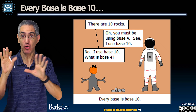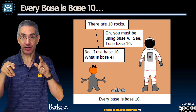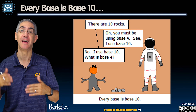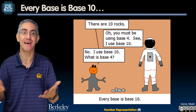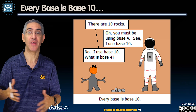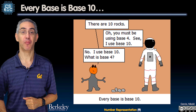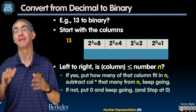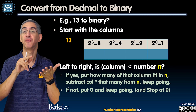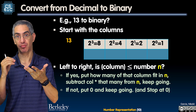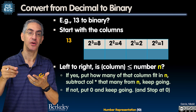Think of it like boxes from Amazon. The box labeled eight is full of eggs, the four box is full of eggs, the two box is empty, the one box has one egg. How many total eggs? Eight and four and one is thirteen. Therefore, 1101 is thirteen.